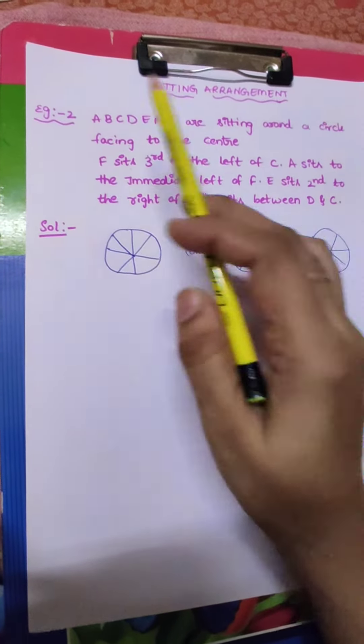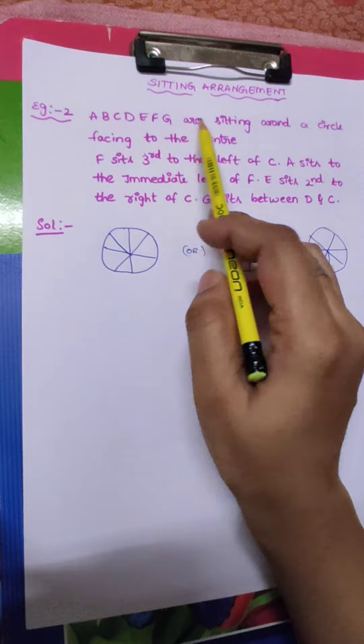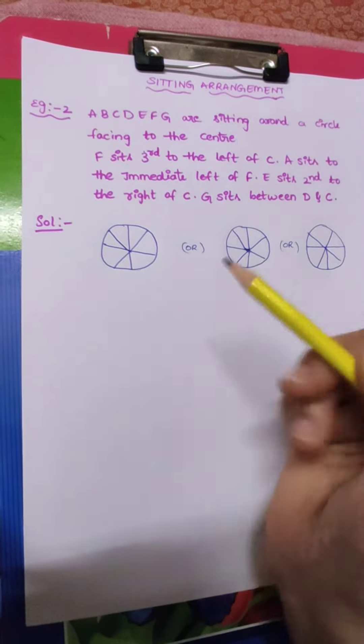Read the question: A, B, C, D, E, F, G, R are sitting around a circle facing to the center.